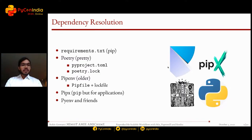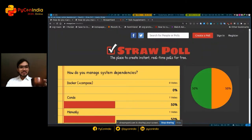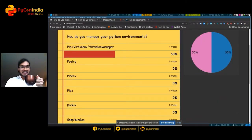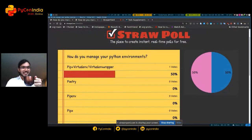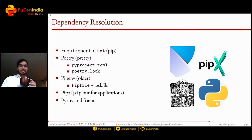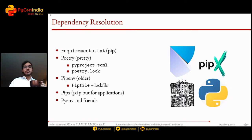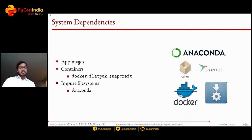Until now, the most standard method is requirements.txt. I see a 50/50 split on conda and pip plus virtualenv. Pip is still the Python standard — I keep hearing that pipenv will replace it, poetry will replace it, but pip is still the only standard approach. A better way is to have a lock file — a TOML file or some structured file where you declare dependencies, the resolution mechanism runs, and stores the results in lock files.